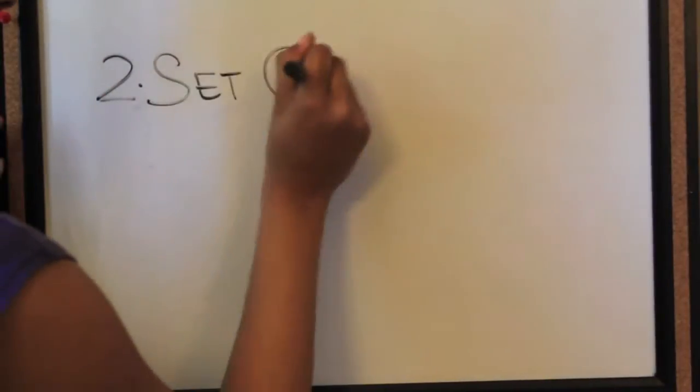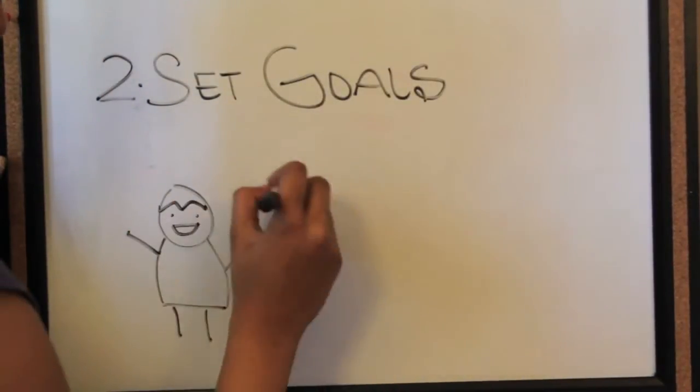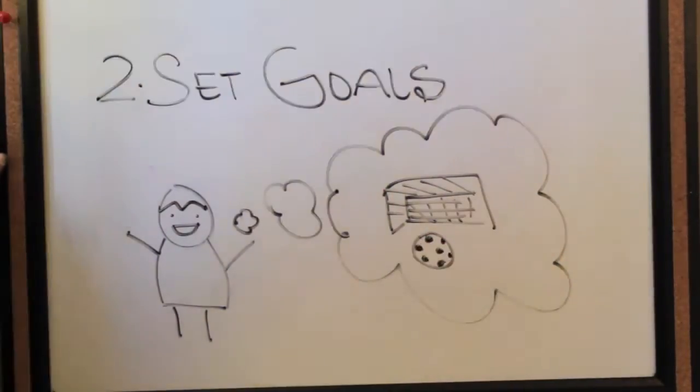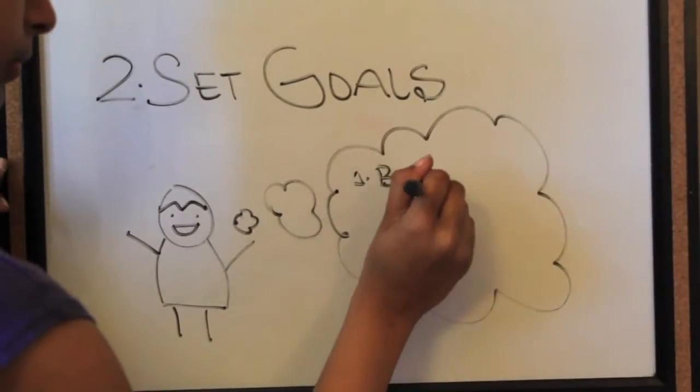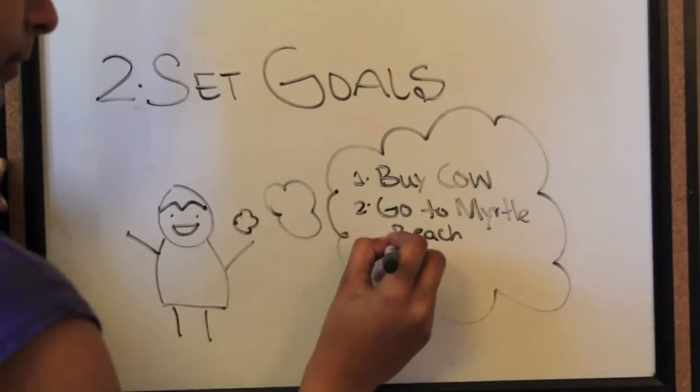All right, so step two is setting goals. Now, these goals can include financial goals, educational goals, or even personal goals. Okay, not those kind of goals, Jack. A realistic goal would be to buy a cow, go to Myrtle Beach on vacation, or maybe even take over the world.